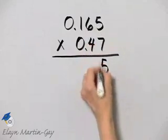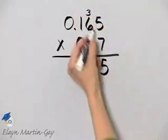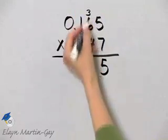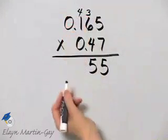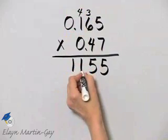7 times 5 is 35, carry the 3. 7 times 6 is 42, plus 3 is 45. 7 times 1 is 7, plus 4 is 11.